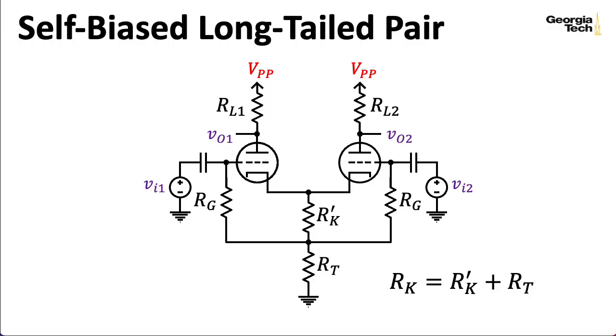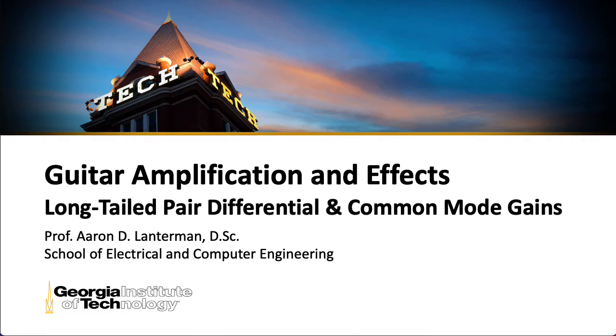One thing that made the derivation we did a couple of lectures ago particularly complicated in terms of figuring out the small signal gain and the output impedance is that we dealt with the general case where these load resistors might be different. What I'm going to show you here is that if you luck out and have the case where these two resistors are the same, then there's a way of decomposing the input signal that lets our analysis be a lot more intuitive.